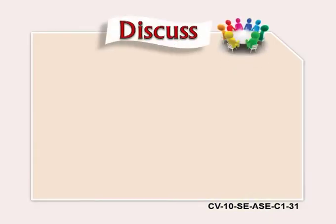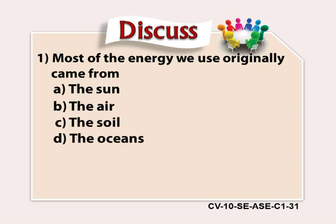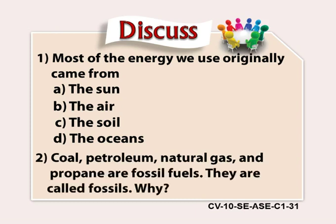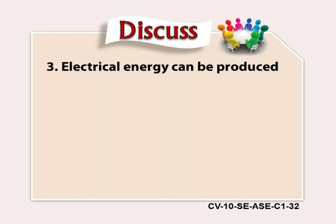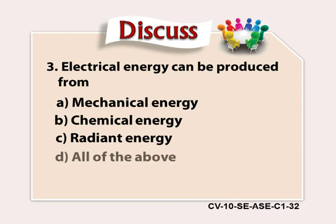Here are some questions to discuss with your friends. 1) Most of the energy we use originally came from — A) The sun, B) The air, C) The soil, D) The oceans. Coal, petroleum, natural gas, and propane are fossil fuels — why are they called fossils? Copy this in your notebook. 3) Electrical energy can be produced from — A) Mechanical energy, B) Chemical energy, C) Radiant energy, D) All of the above. Copy this down in your notebook.